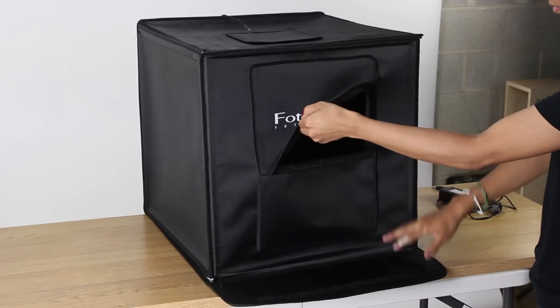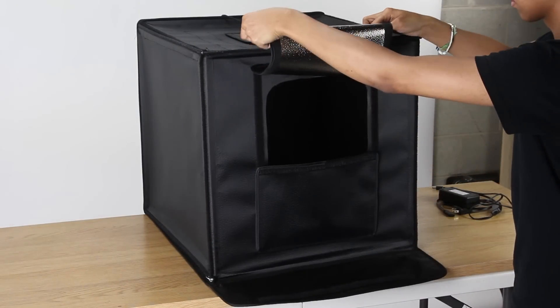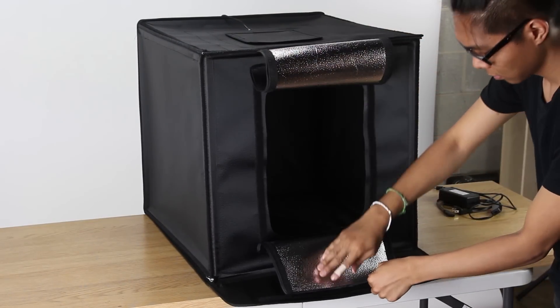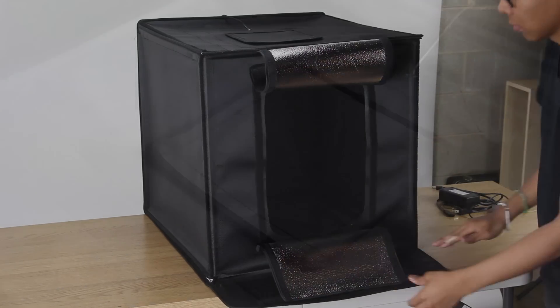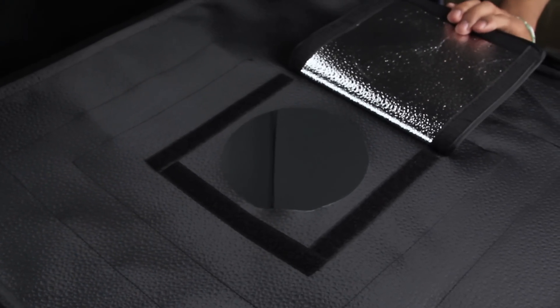Open the front shooting window flaps and roll them up, attaching them to the strips on the top and bottom of the tent. You can also shoot through the top of the light tent. Just open the top shooting window flap.